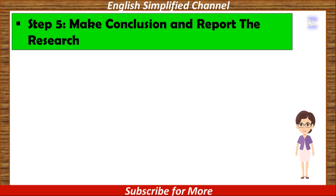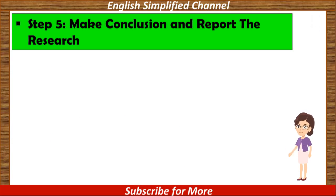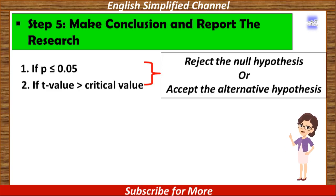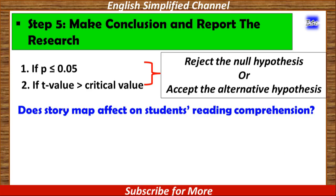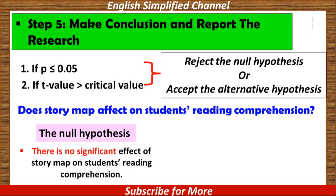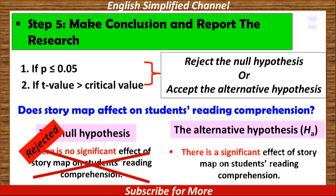Now we have come to Step 5: Make conclusion and report the research. If the p-value is less than or equal to 0.05, or if the t-value is higher than the critical value, then the null hypothesis is rejected, meaning the alternative hypothesis is accepted. For example, in my research on story map and reading comprehension, I find the p-value is less than 0.05 and the t-value is higher than the critical value. Therefore, I reject the null hypothesis — there is no significant effect — and accept the alternative hypothesis — there is a significant effect of story map on students' reading comprehension.